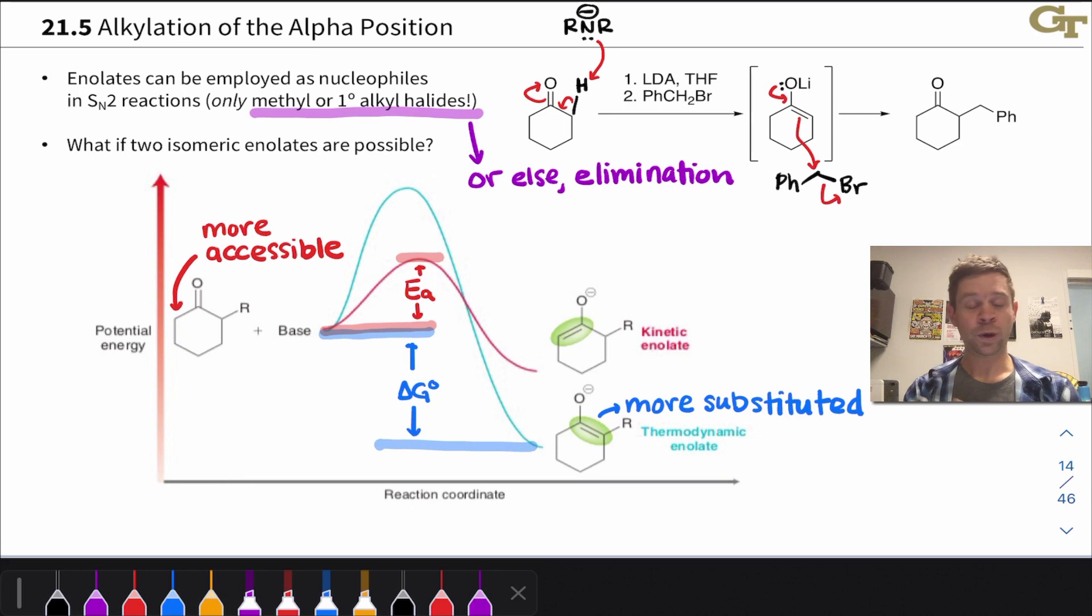So here, although we do have ways to generate the thermodynamic enolate, alkylating thermodynamic enolates with the SN2 reaction is generally profoundly problematic. The point really for this slide for the time being is that the less substituted enolate forms more quickly, the more substituted enolate is more thermodynamically stable. And this is a general finding for ketones with two alpha carbons with different substitution patterns.